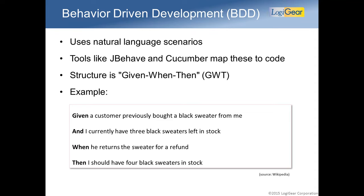There are several tools — JBehave, Cucumber, SpecFlow, Robot Framework — that can understand these sentences and map them to technical functions in C#, Java, Ruby, or Python, then execute the tests. The arguments like 'black sweater' and 'three' are extracted and passed into the mapped functions.